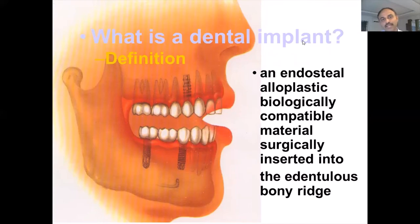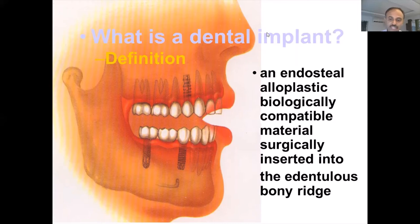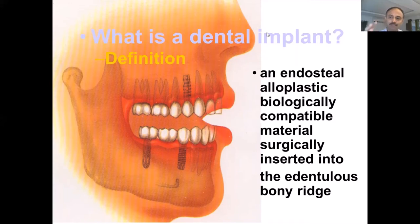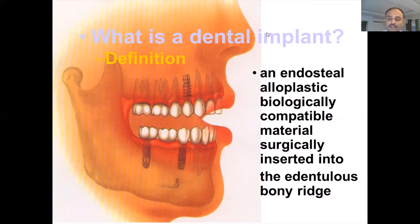From an exam point of view, let us go to a few definitions and the classification of implants. Implants are defined as an endosteal, alloplastic, biologically compatible material which is surgically inserted into an edentulous bony ridge. The endosteum refers to the space between the cortical bone — the medullary space — where the implant is placed. The implant is made of titanium, which is a very biocompatible material, and it is inserted into the edentulous ridge to restore function.